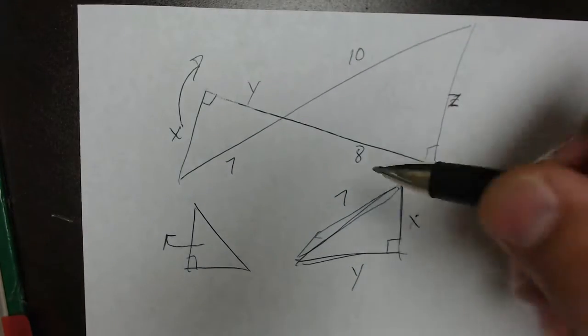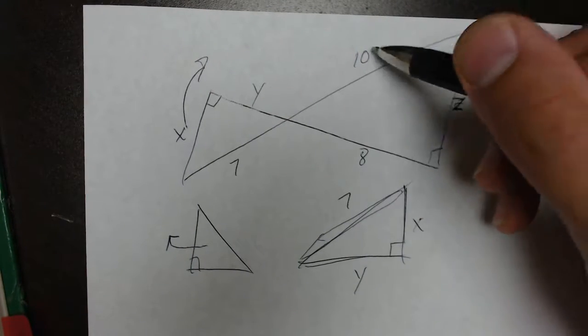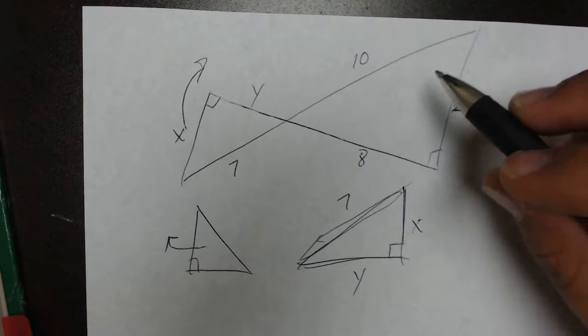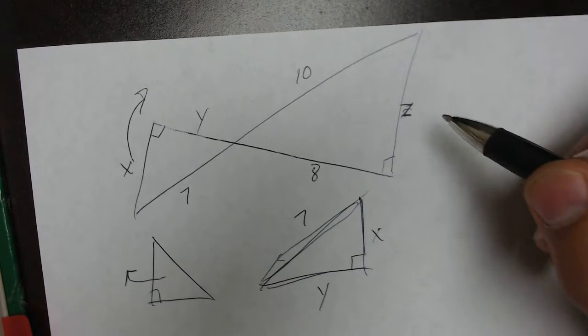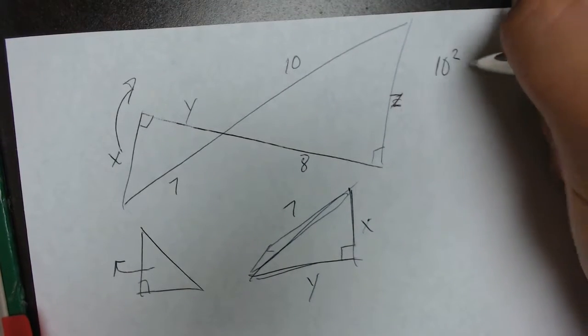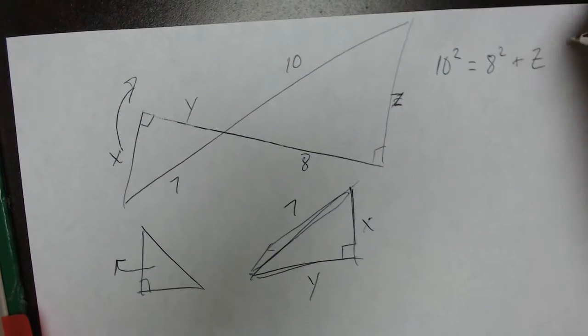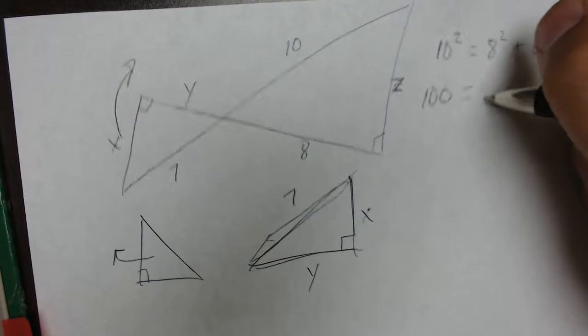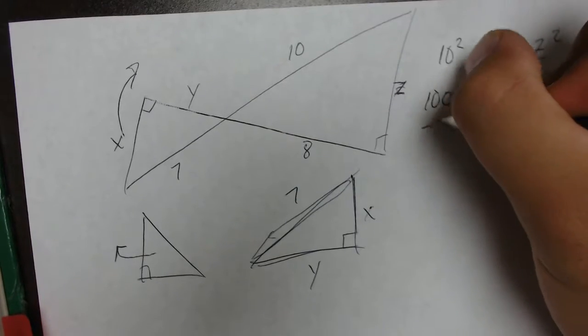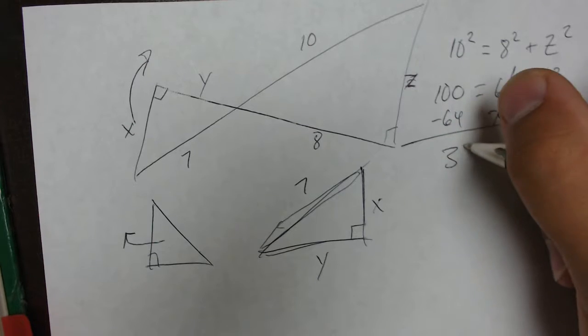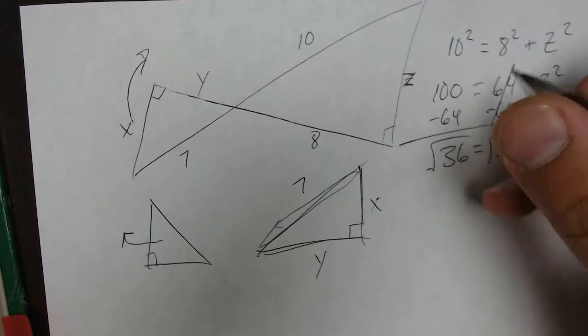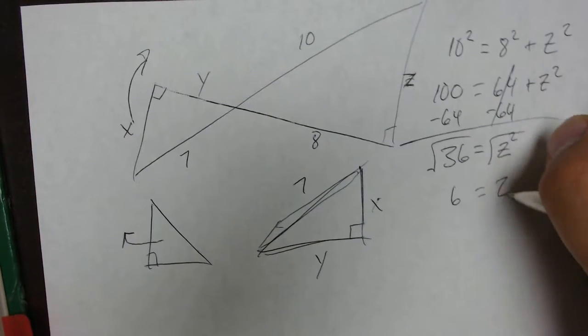If we're going to use ratios, we could say 10 is to 7 as 8 is to Y, or 10 is to 7 as Z is to X. Now, the first thing that we can do using simple Pythagorean theorem is we can solve for Z, because we have a hypotenuse, we have one side, we're just missing one on this triangle. We'll write 10 squared is equal to 8 squared plus Z squared. We get 100 equals 64 plus Z squared. We subtract 64 from each side, and we get 36 equals Z squared. Square root of both sides, square root of 36 is 6. So Z is going to equal 6.